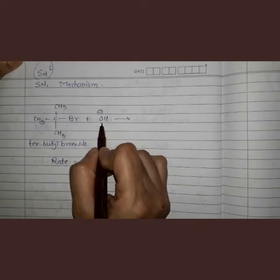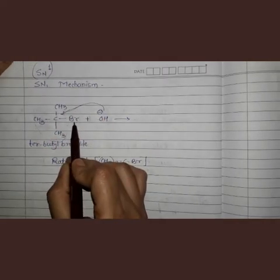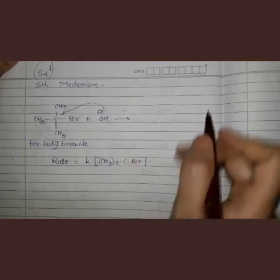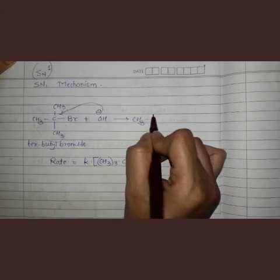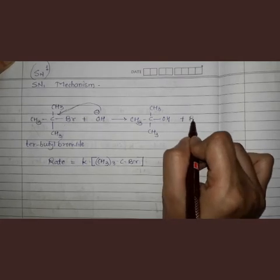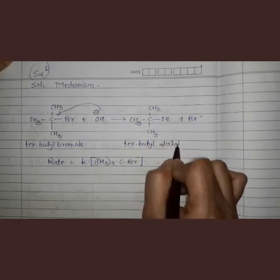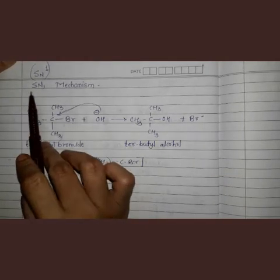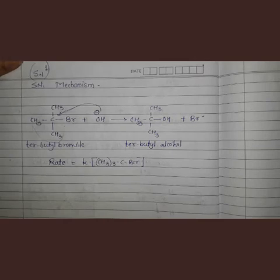This nucleophile — the OH⁻ ion — will attack on this carbon atom, so the Br⁻ ion will get substituted by the OH⁻ ion. The tertiary butyl group remains as it is, but instead of Br we write OH, and the Br⁻ ion gets eliminated. The name of this product is tertiary butyl alcohol. This reaction is an SN1 reaction — let us see why.